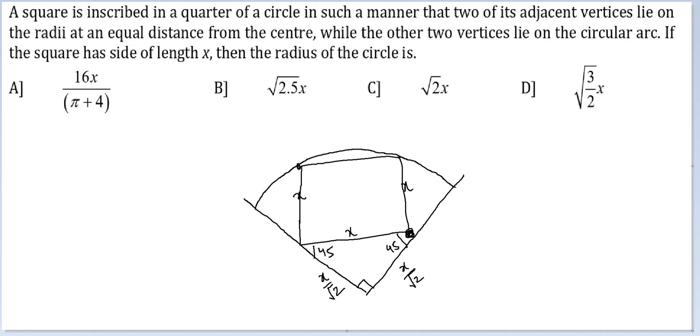Now, what I am doing is from this point, I am dropping a perpendicular on the radius. Let's see how that helps. This is 45 degrees. This is 90 degrees. So, this will also be 45 degrees. This is a perpendicular, so this is 90 degrees. This will also be 45 degrees. Can you see?